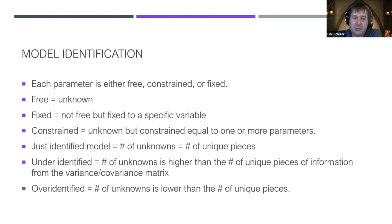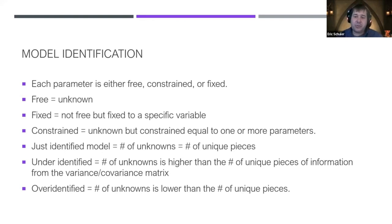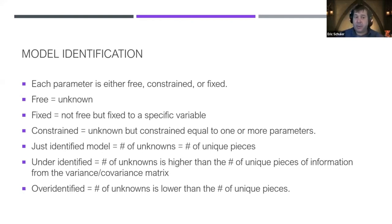That might sound like gibberish right now but I'll walk through it with actual data. Constrained parameters are used a lot in multiple group analysis — for example, looking at measurement bias across sex, gender, or race to see if a measure is fair. We would constrain parameters to be equal across groups and look for misspecifications.